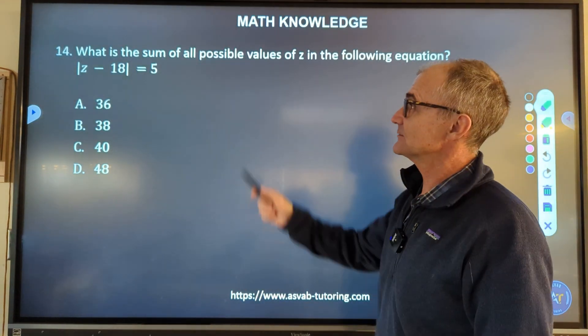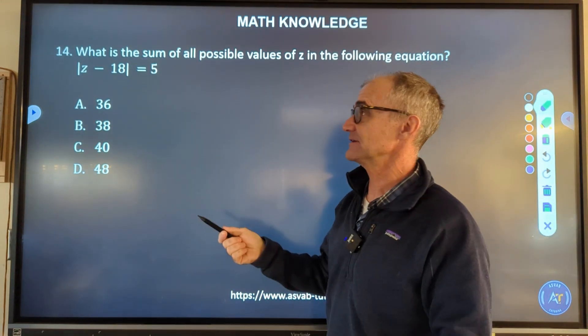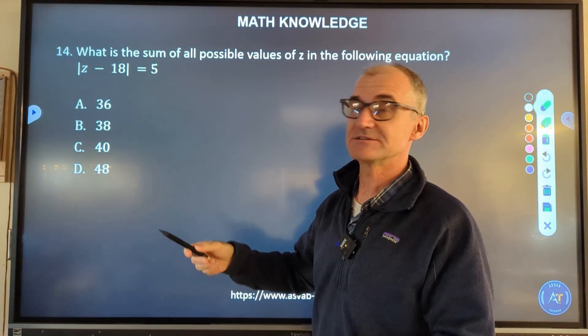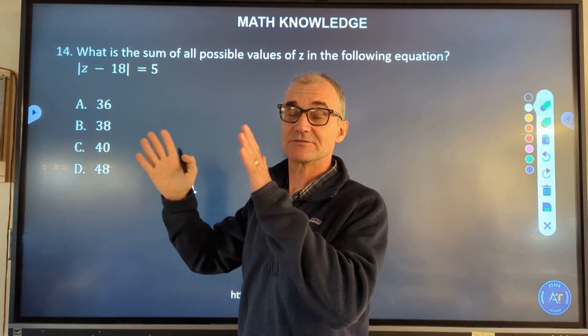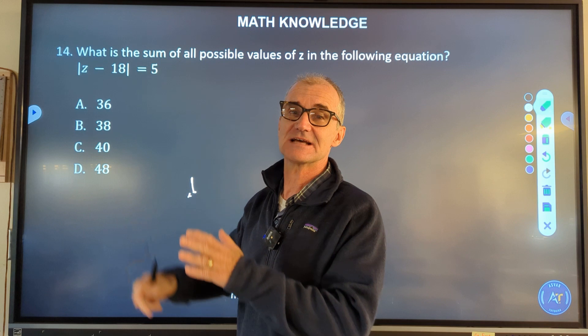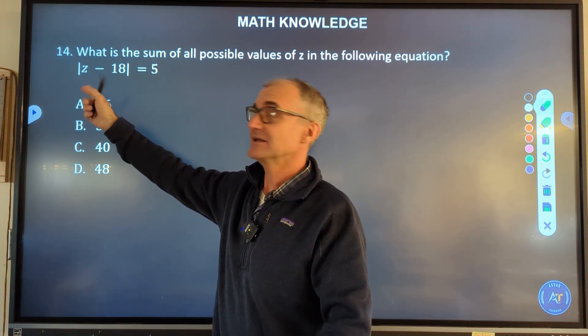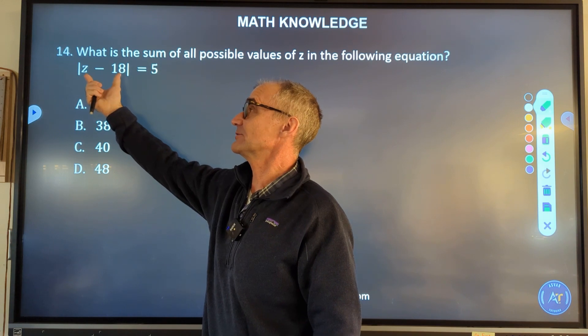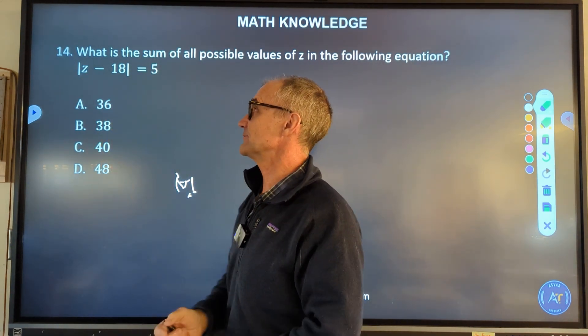Number 14, what is the sum of all possible values of z? So this is also solving an equation. The one thing we're introducing on this one are these straight bars, they are absolute values. So those two straight bars mean everything inside of it becomes positive. Whatever is in there, if this thing turns out to be a -23, absolute value makes it a 23, so it becomes positive.